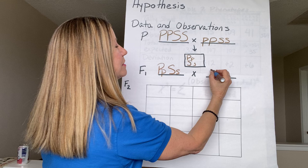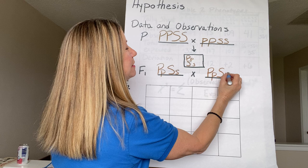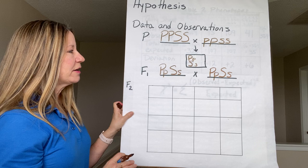So our F1s are going to be big P, little p, big S, little s — and I'm going to cross it times another like itself: big P, little p, big S, little s. That will be our F1 cross.